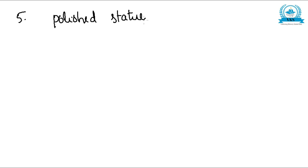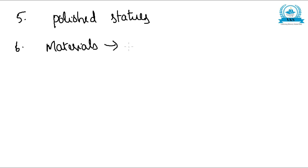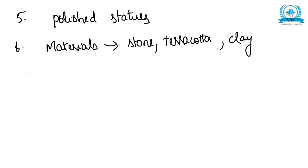The fifth characteristic: the statues were polished. Polished statues are an important feature of the Gandhara school of art. The sixth characteristic: the main materials used for making the statues were stone, terracotta, and clay. These were the three main materials used for making statues during this time.